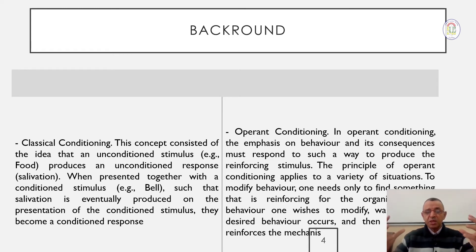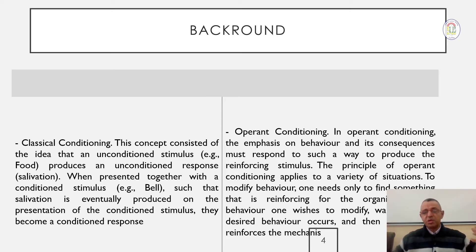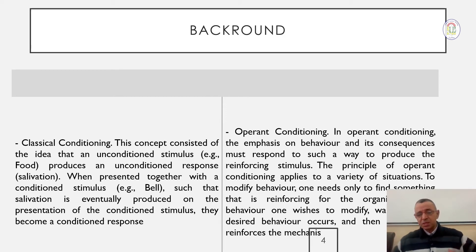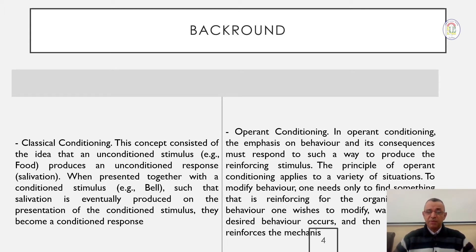This simply means that the process of conditioning is based on two elements: stimulus and response, with repetition in between. According to Pavlov, humans can develop their behavior based on this process — conditioning through stimulus, response, and repetition — and through these processes we can develop any human behavior, including language, considering that language is a human behavior.